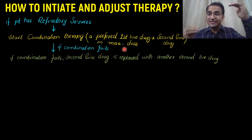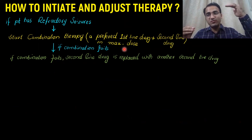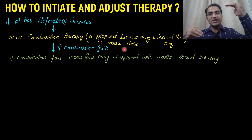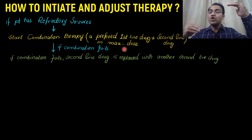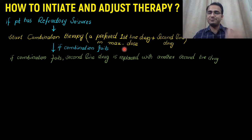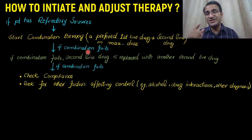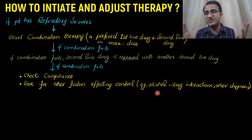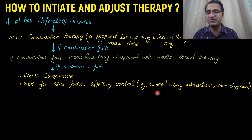If this combination fails, replace the second-line drug with another second-line drug while continuing the first-line drug at maximum dose. If this still fails, check compliance with frequent drug levels and look for factors affecting control: alcohol intake, drug interactions, other comorbidities, and consider a further workup or alternative diagnosis for this refractory seizure.